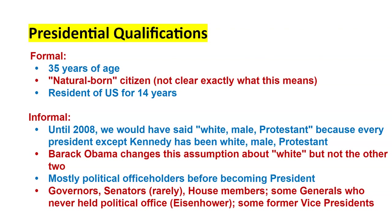Informally, the qualifications look very different. Presidents have been male — Hillary Clinton came closest to breaking that glass ceiling. Other than Barack Obama, they've been white. Other than JFK and President-elect Joe Biden, they've been Protestant. Kennedy and Biden are Catholic. Otherwise, presidents have been white, male, and Protestant — with those three exceptions. The demographics of the country are changing, with more majority-minority populations in urban centers and electoral vote gains in states like Texas, Florida, California, and Arizona.